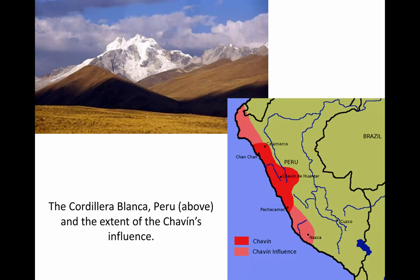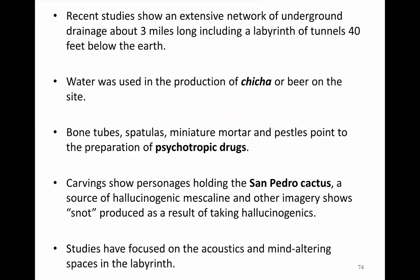This image shows us a view of the Cordillera Blanca — the majestic snowy peaks of the Andes Mountains to the east of Chavin de Huantar — and a map showing the location of Chavin de Huantar in the central highlands. It also shows the diffusion of its style, its ideas, and its influence along the north coast beyond Chan Chan and Cajamarca, and along the south coast beyond Pachacamac all the way down to the Nazca Desert.